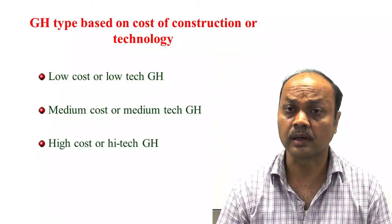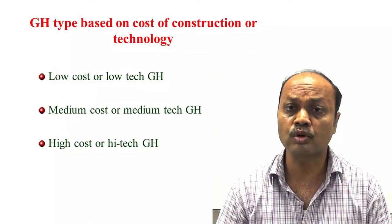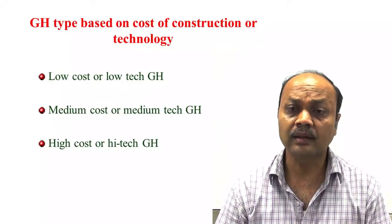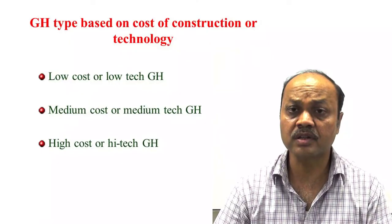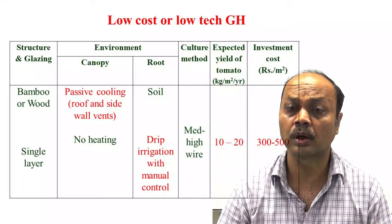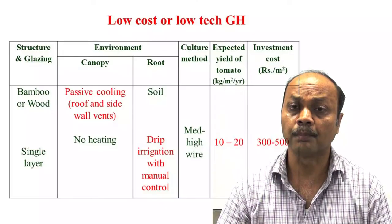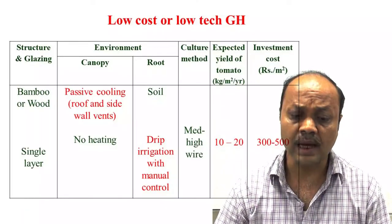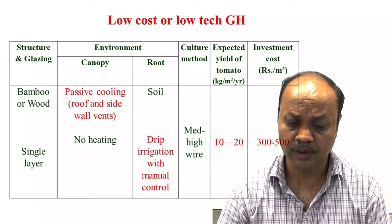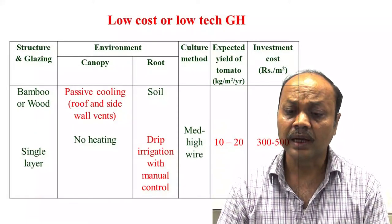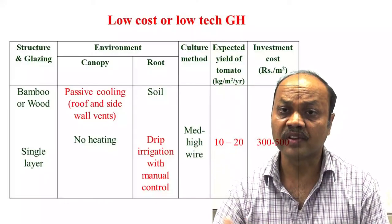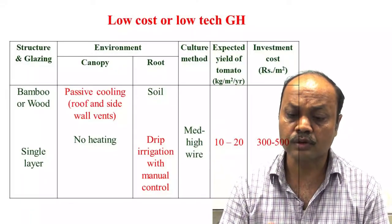In classification, greenhouses are of three types: low cost — meaning low technology or no technology; medium cost with medium technology; and high cost. In low cost, no gadgets are used to control microclimate parameters. Passive cooling is used, locally available material is used for construction, single layer film cladding material is used, and the irrigation system is manual.